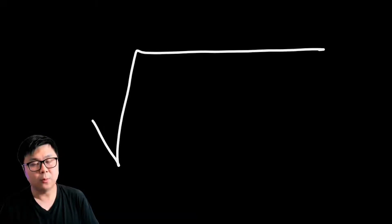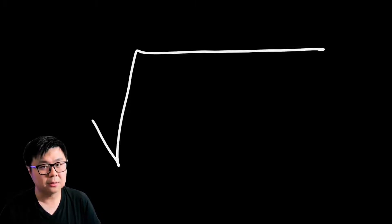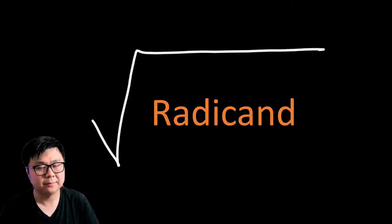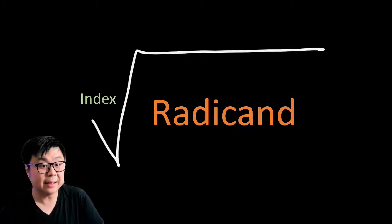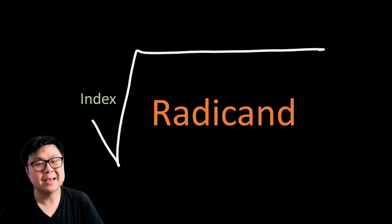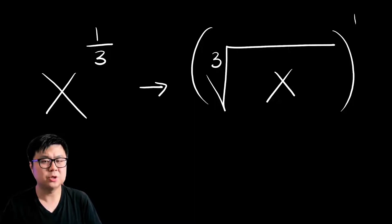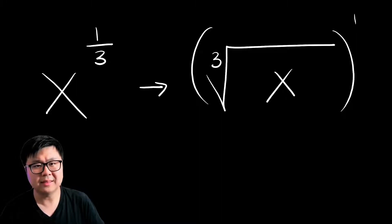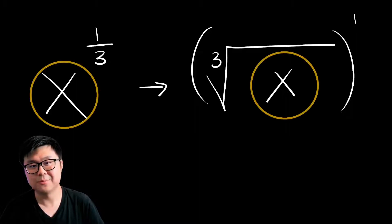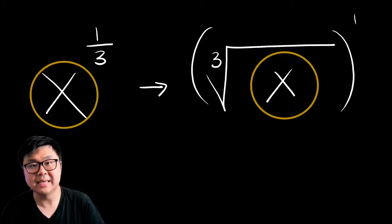First, a little terminology. What you see on the screen here is a root, also known as a radical. What goes inside a radical, we call the radicand. And what goes in that little corner on the left, we call the index. If you don't see a number or letter in the index, you can assume it's the number two because two is the default index we use. So we can rewrite rational exponents — like x to the power of one-third on the left — as a radical. The base, or the x, becomes the radicand, the denominator 3 becomes the index, and the numerator 1 becomes the exponent on the outside of the brackets.